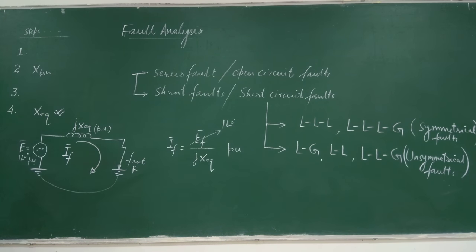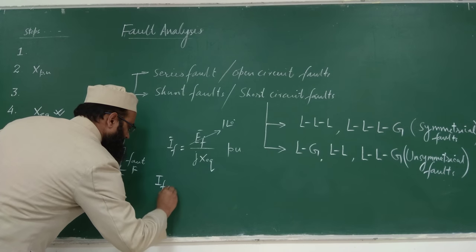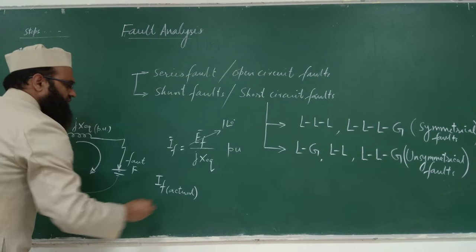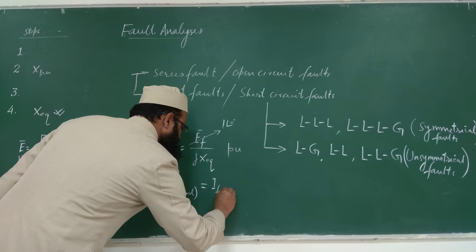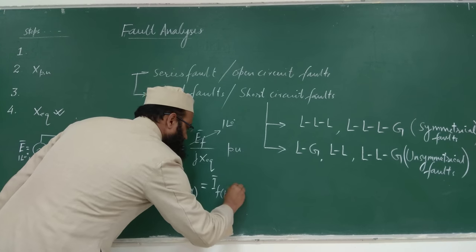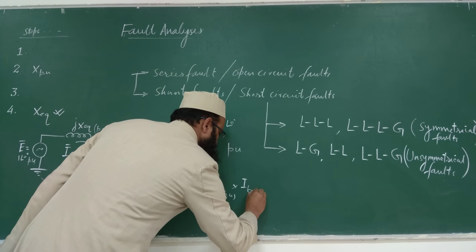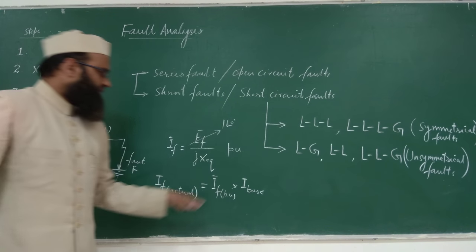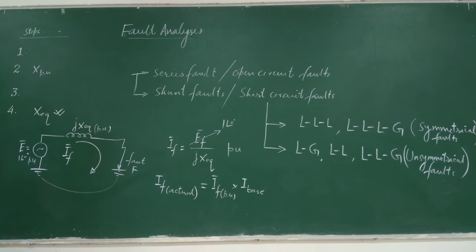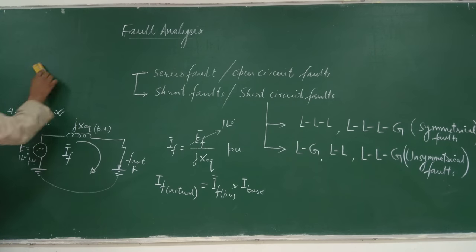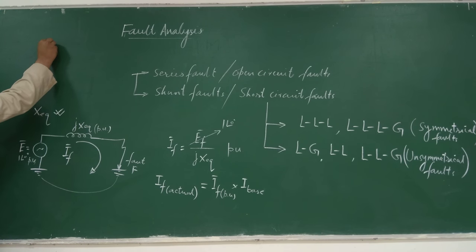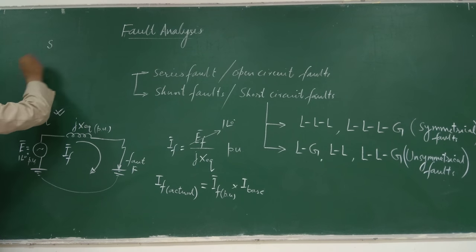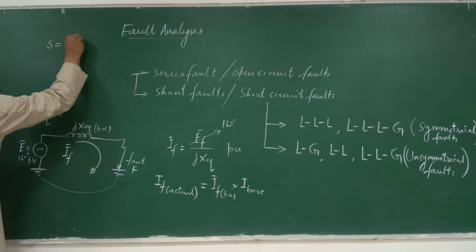Once the per unit fault current is obtained, the actual value is: IF_actual = IF_pu × I_base. The base current is found from: I_base = S / (√3 × V_L), where S is the three-phase base capacity and V_L is the line voltage. Generally, since voltages given are line voltages, we use this relation to find I_base.